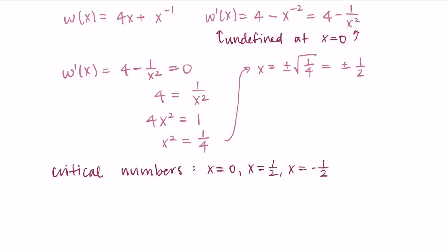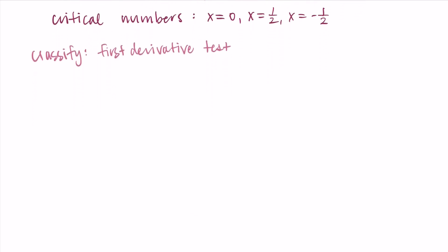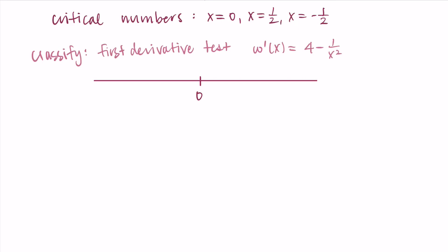Now we want to classify these critical numbers — that's our second step. We use the first derivative test: we draw these on a number line to help us pick test points in each interval. I'll also rewrite the derivative, w'(x) = 4 − 1/x², since we'll need it. If you haven't tried the testing part yet, you might want to pause and try it on your own.